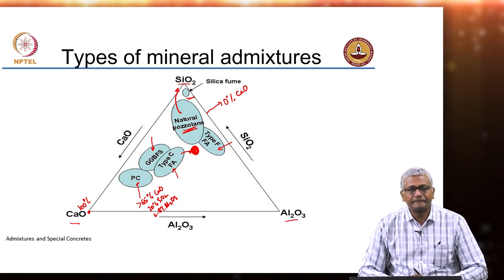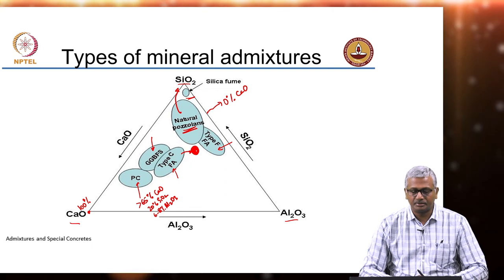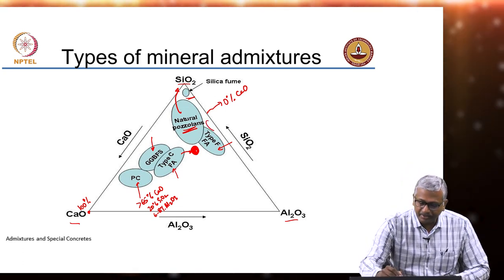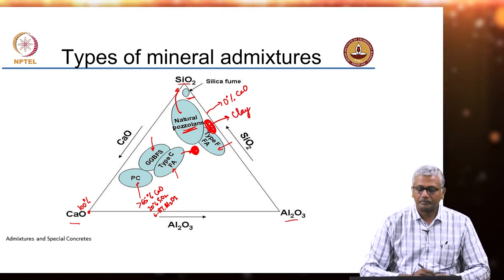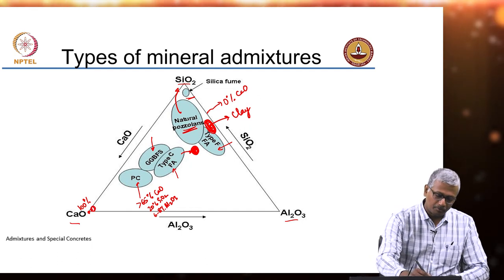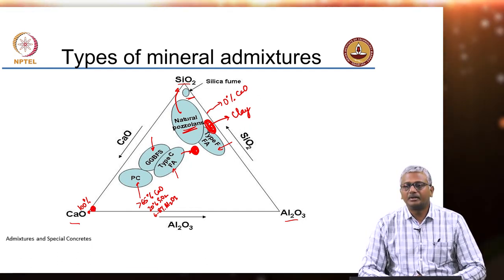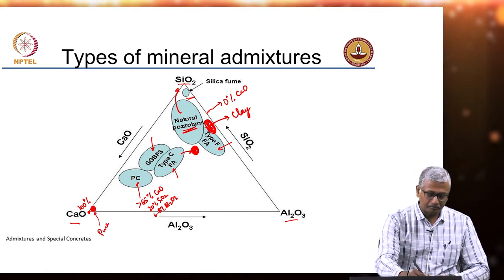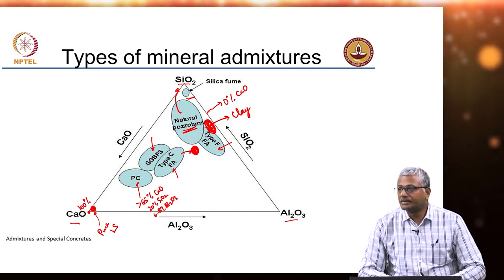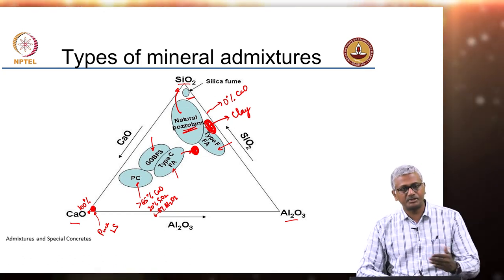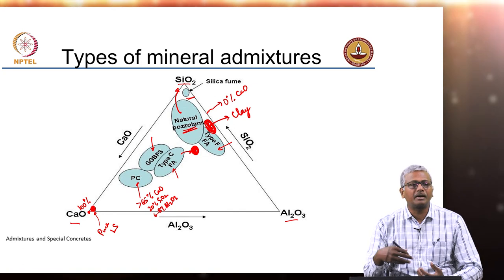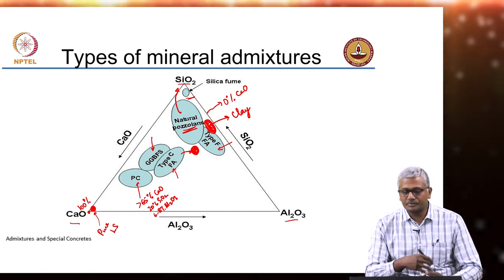What about metakaolin or kaolinite clay — where would that be in terms of composition? Again, not much or nothing of calcium, so it should be somewhere here. What about limestone? Limestone will be almost all the way at the calcium oxide vertex unless it has impurities. If it has impurities in the form of clay, silica, or quartz, then obviously the position will shift. So this is an easy way to represent the composition and can help you track what the potential compound formations could be for all of these different materials.